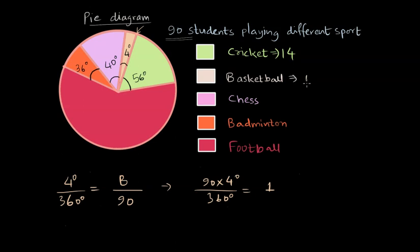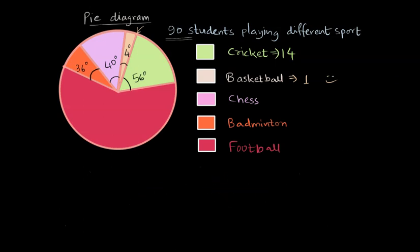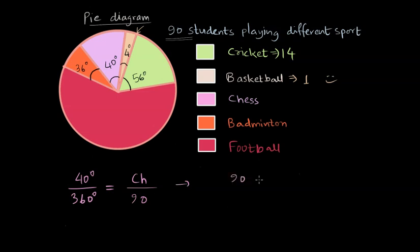Only one student plays basketball — that's a little funny; it's unclear who that student is playing with! Anyway, let's go for the purple color, which represents chess. The central angle is 40 degrees. So 40/360 = CH/90. Multiplying both sides by 90 gives CH = 10. So 10 students are interested in chess.